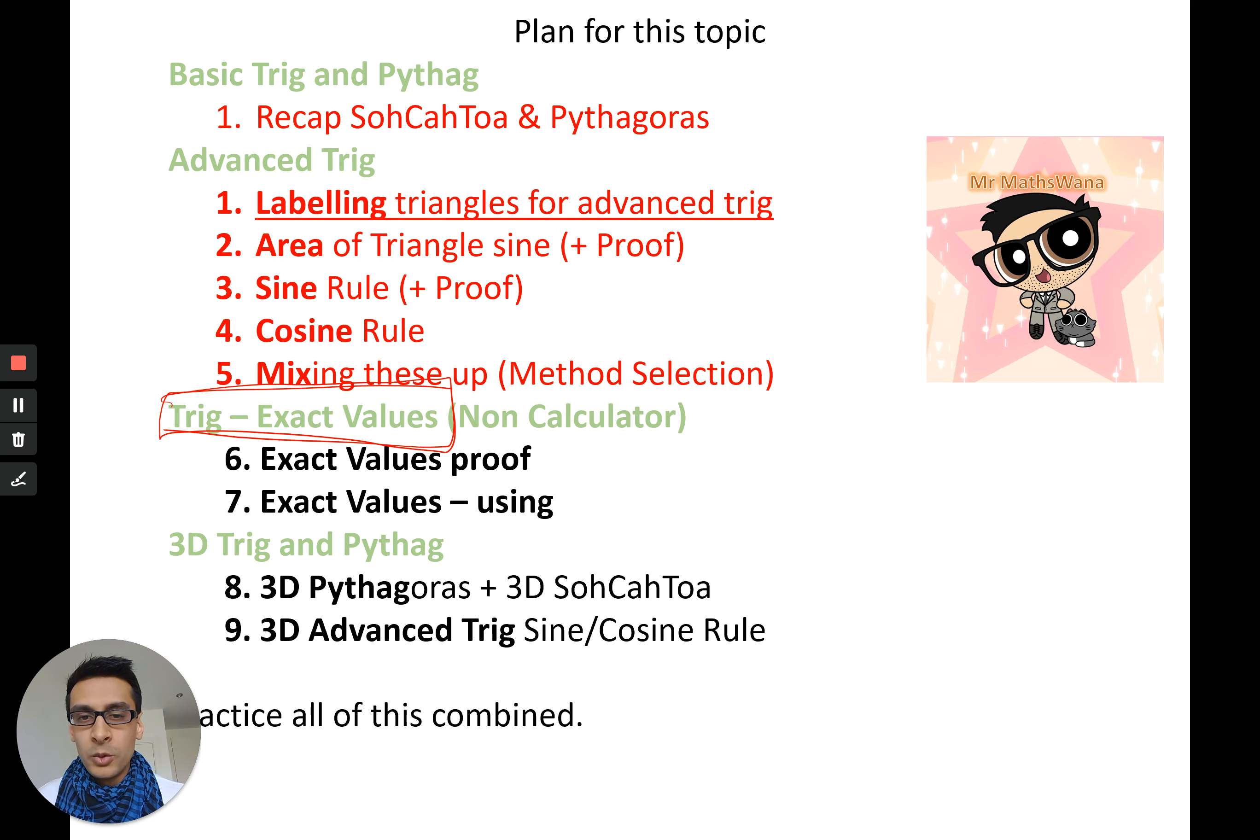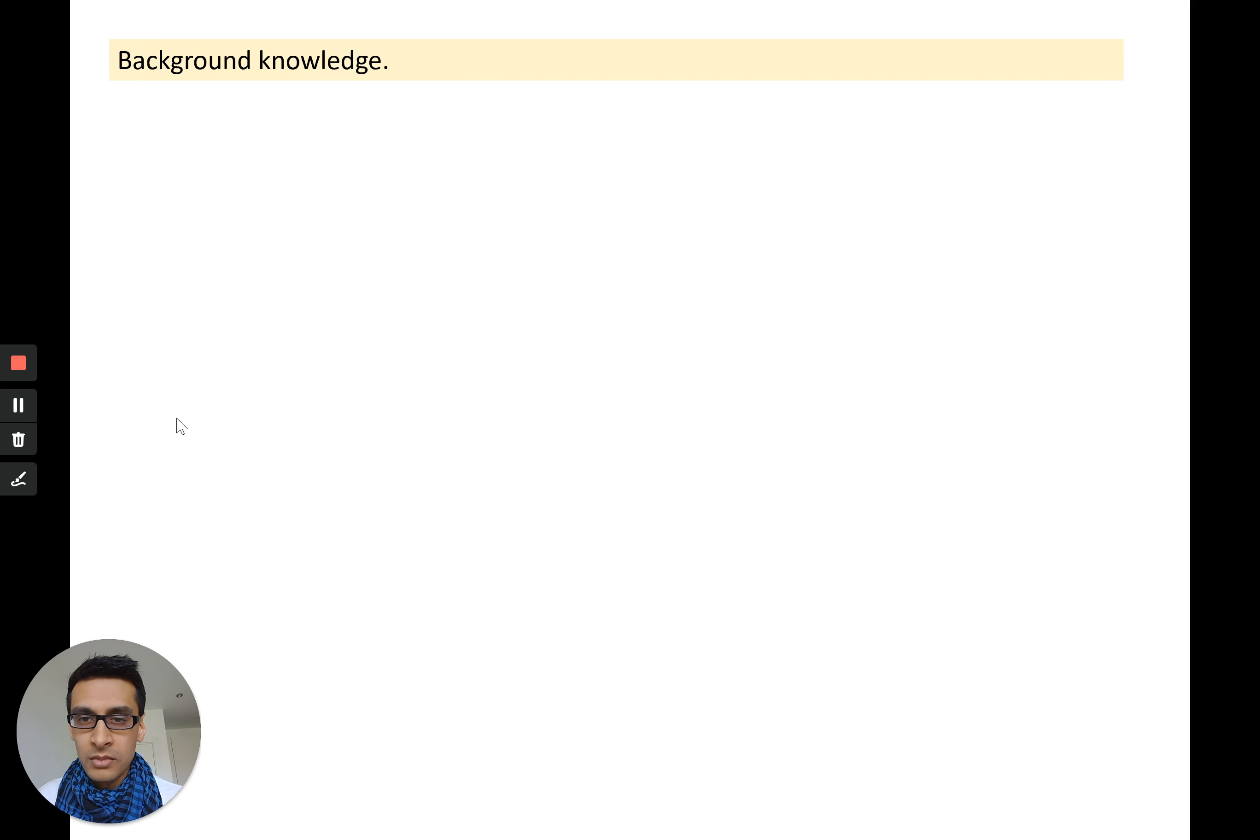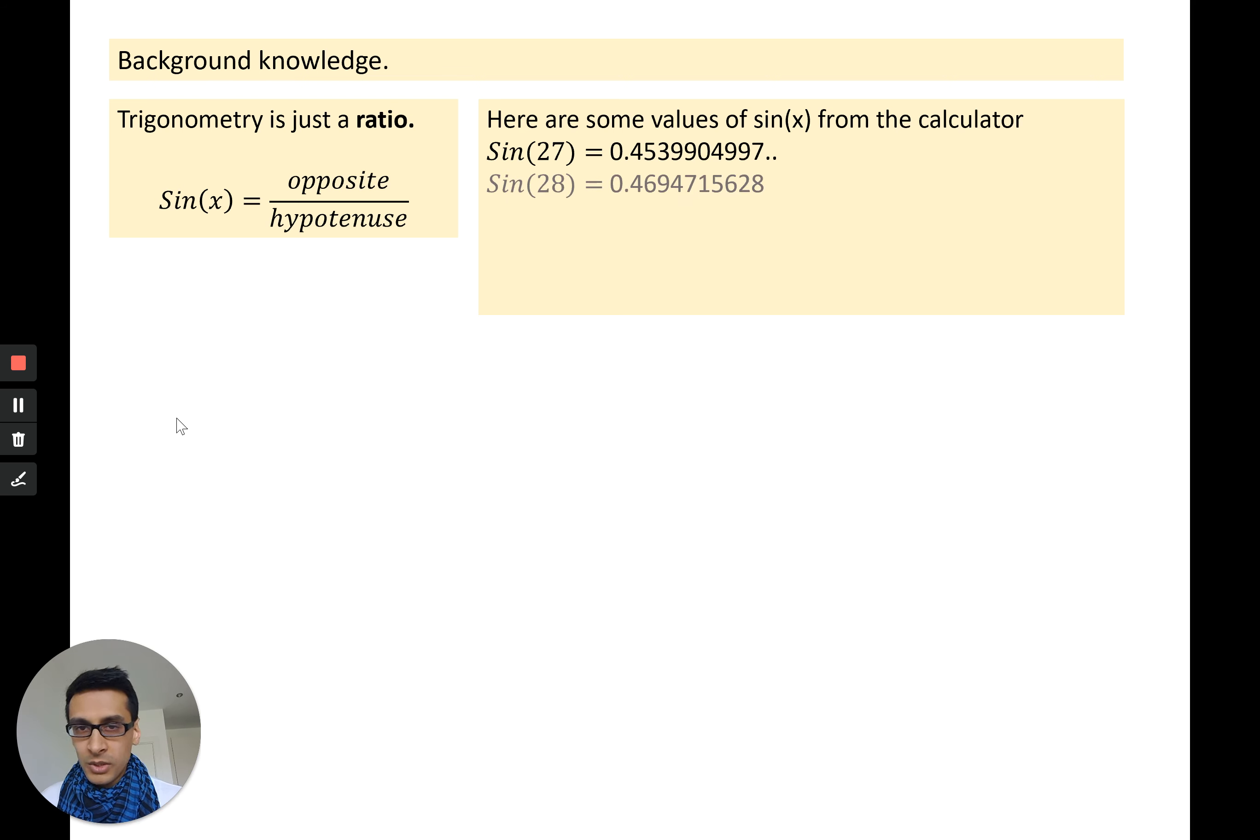Background knowledge: trigonometry is just a ratio. For example, sine is the ratio of the opposite side to the hypotenuse side. When you put these values in the calculator you get stuff like sin(27), sin(28). I've just chosen some random values here. What you realize is in certain trig values like sin(30) you may notice here you get a nice number, you don't get a number that goes on and on, something like a half. Sometimes you get a third as well.